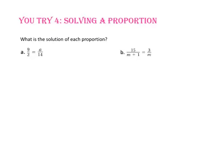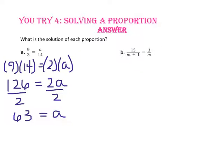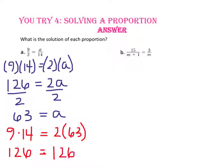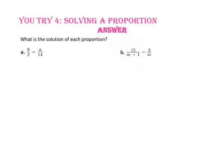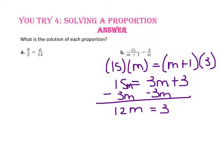Pause the video and do you try number 4. For part A, let's use cross products again: 9 times 14 will equal 2 times A. 126 equals 2A. Divide both sides by 2, and 63 equals A. To check, substitute 63 in for A. 126 equals 126, so we know we are correct. In part B, use the cross product property: 15 times M will equal M plus 1 times 3. 15M equals 3M plus 3. Subtract 3M from both sides and 12M equals 3. Divide both sides by 12, and M equals 1 fourth. To check your answer, substitute 1 fourth in for M and make sure that your cross products are equivalent.